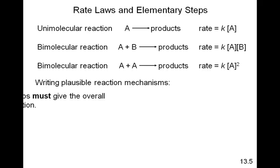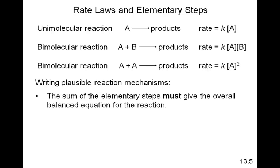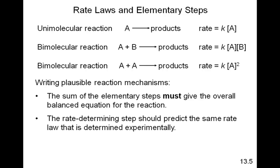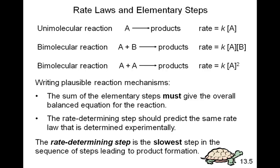Writing plausible reaction mechanisms: the sum of the elementary steps must give the overall balanced equation for the reaction. The rate-determining step should predict the same rate law that is determined experimentally. Whatever the rate law is for the slowest elementary step, that is considered to be the rate law for the overall reaction, because the slowest elementary step is the rate-determining step. The rate-determining step is the slowest step in the sequence of steps leading to product formation.